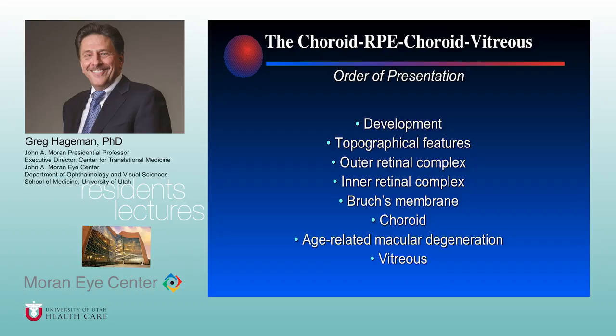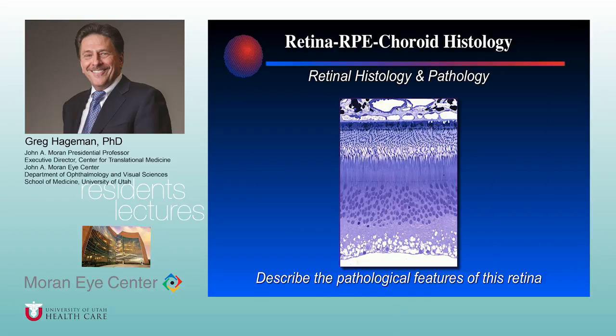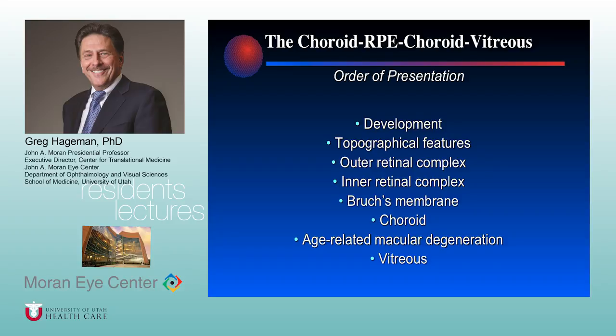What I'd like to do today is talk about ocular retinal development, because it's always helped me understand the structure of the eye better from a developmental perspective. We'll talk about topographical features of the retina and the back of the eye. I like to talk about the outer retina — the avascular piece — and the inner retina, the vascularized piece. We'll probably end with the inner retina today, and next week cover Bruch's membrane, the choroid, and the vitreous, using macular degeneration as an example.